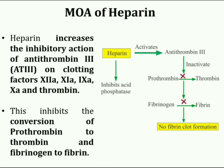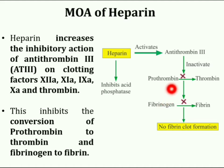Next is the mode of action of heparin. Heparin increases the inhibitory action of antithrombin III on clotting factors XIIa, XIa, IXa, Xa, and thrombin. It inhibits the conversion of prothrombin to thrombin and fibrinogen to fibrin. It also inhibits platelet function and can reduce the activity of antithrombin III at very high doses.